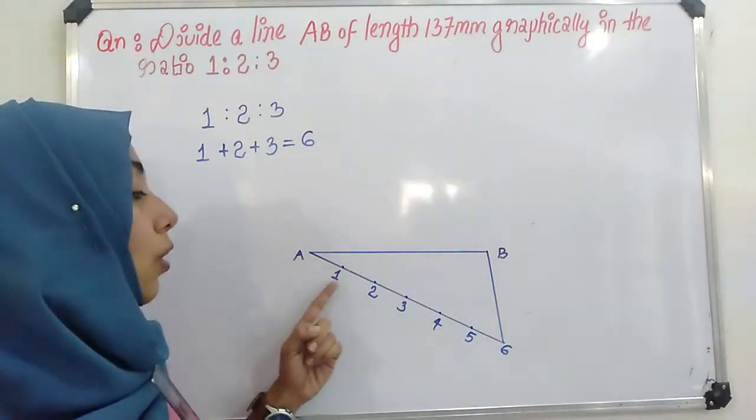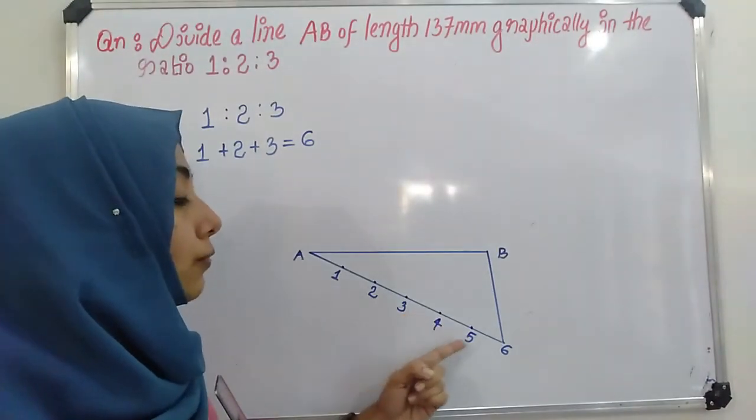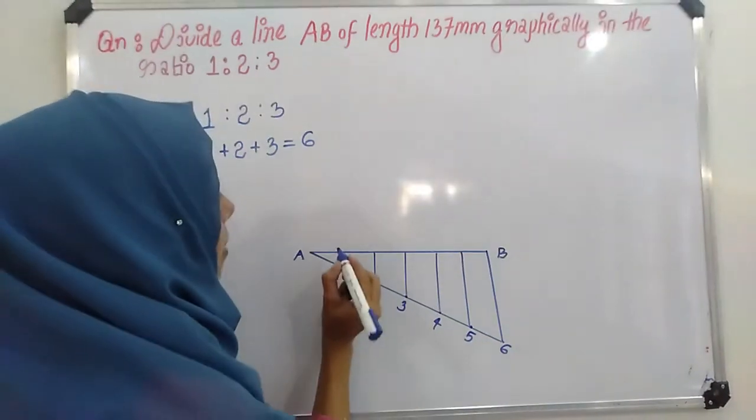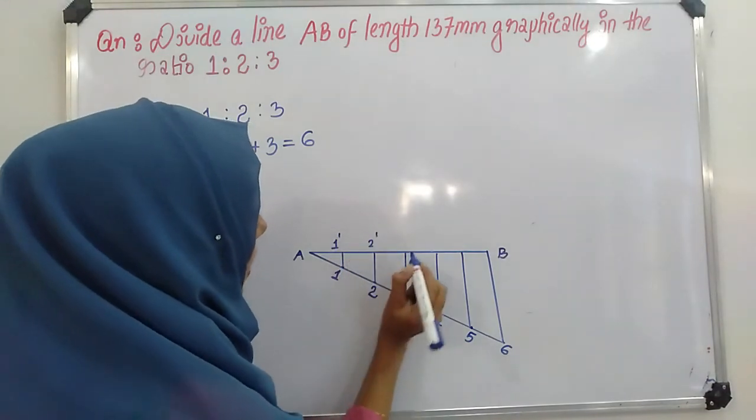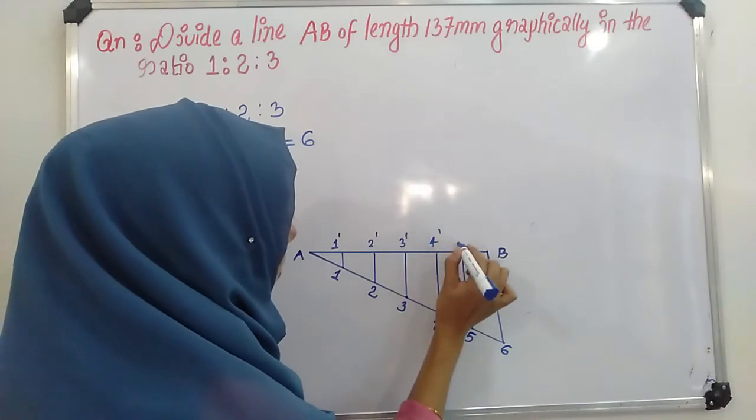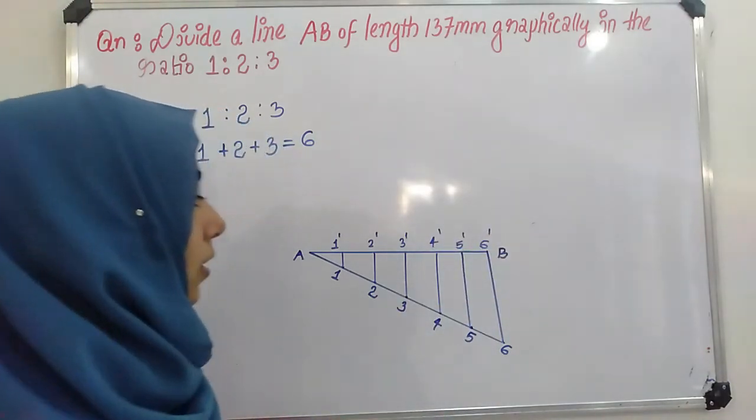Next, draw lines through 1, 2, 3, 4, 5, parallel to the line B6. Mark these points as 1', 2', 3', 4', 5', 6'.